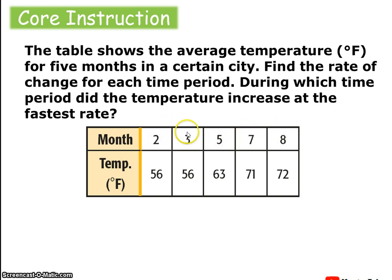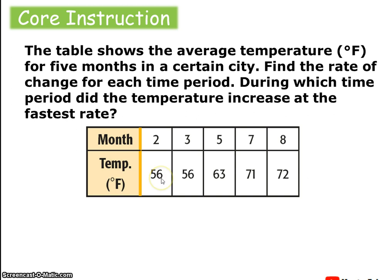Notice that the change in time varies in this case. From month two to three it's a one-month jump, then a two-month jump, then another two, then one. Temperature also varies from month to month. From the second to third month it doesn't change at all. From third to fifth it changed from 56 to 63 degrees. Fifth to seventh changed from 63 to 71, and seventh to eighth changed from 71 to 72.